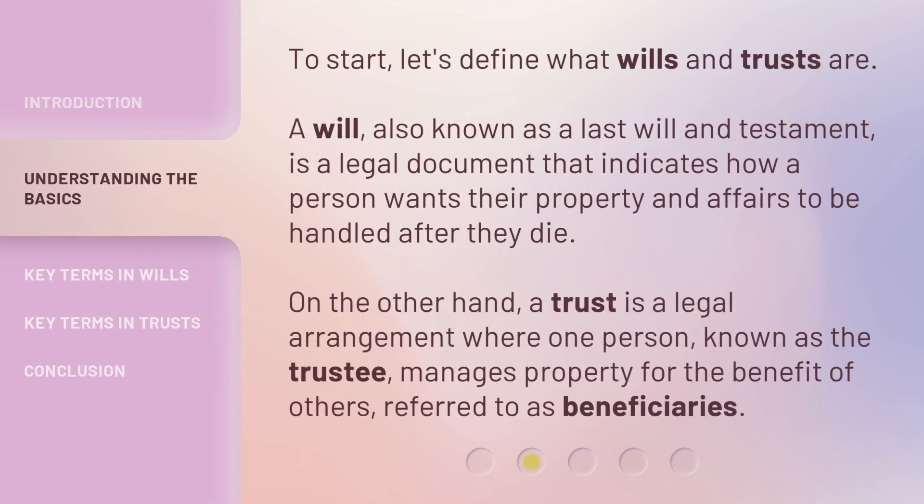To start, let's define what wills and trusts are. A will, also known as a last will and testament, is a legal document that indicates how a person wants their property and affairs to be handled after they die. On the other hand, a trust is a legal arrangement where one person, known as the trustee, manages property for the benefit of others, referred to as beneficiaries.